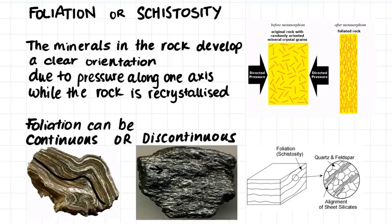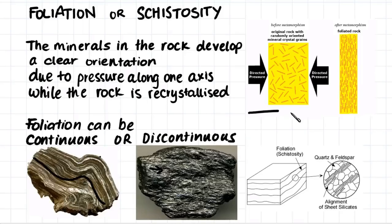Some minerals have a predisposition to form elongated crystals, such as quartz and feldspar. When we apply pressure in one direction, these elongated crystals line up and create our foliation.